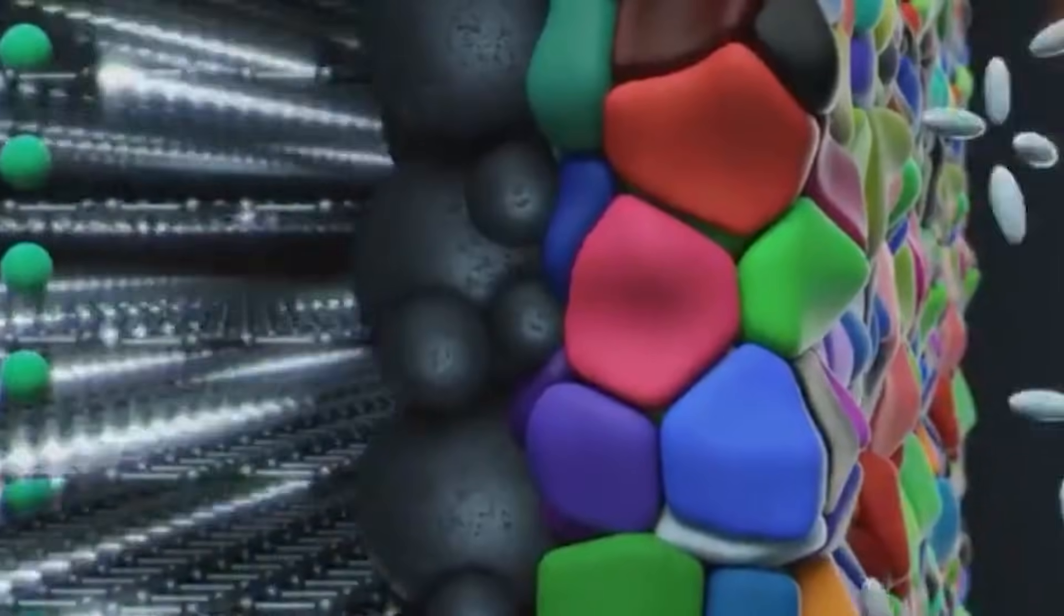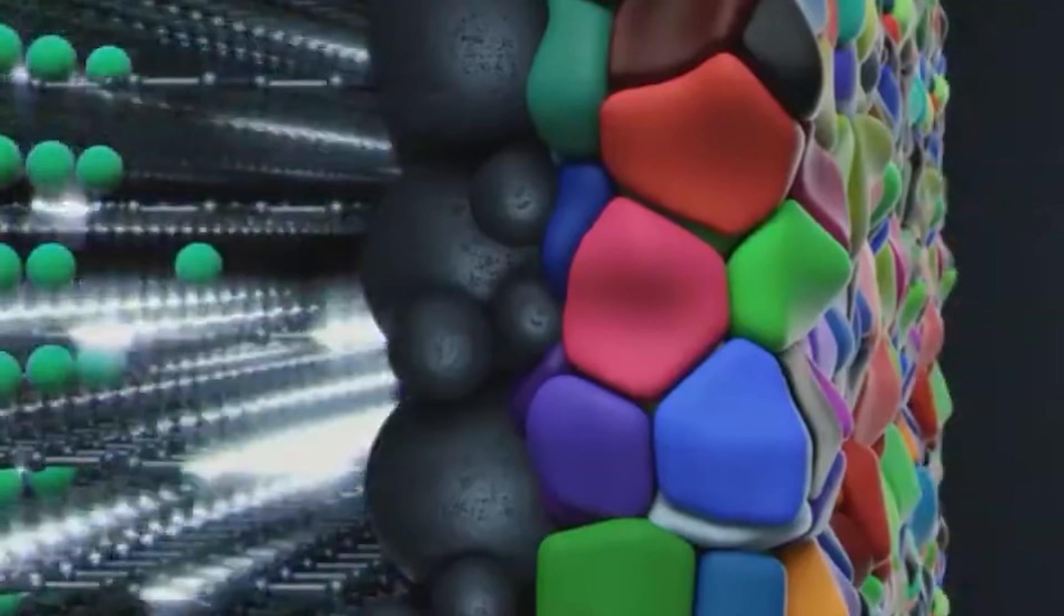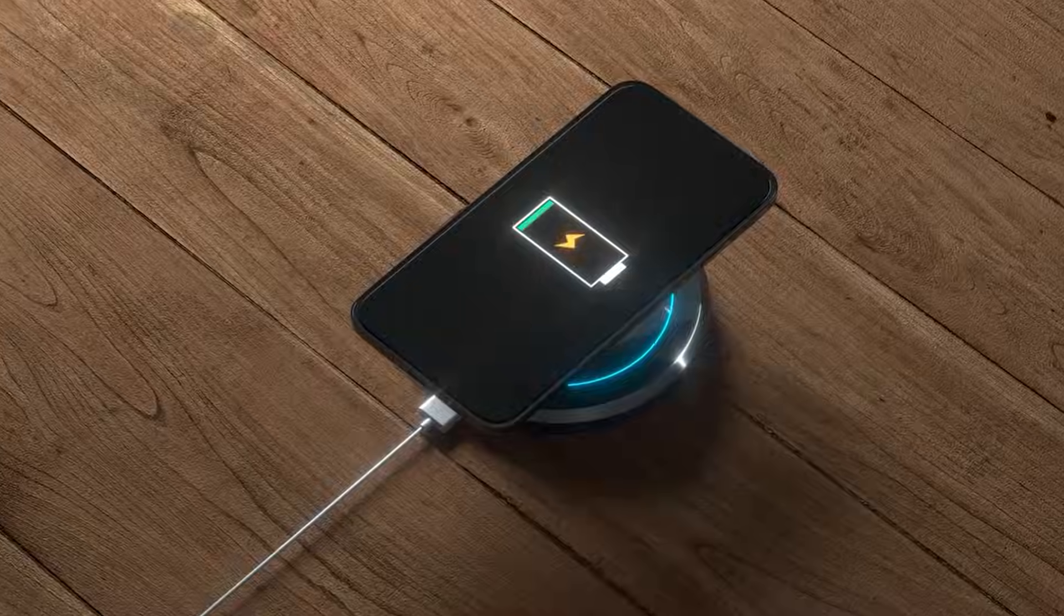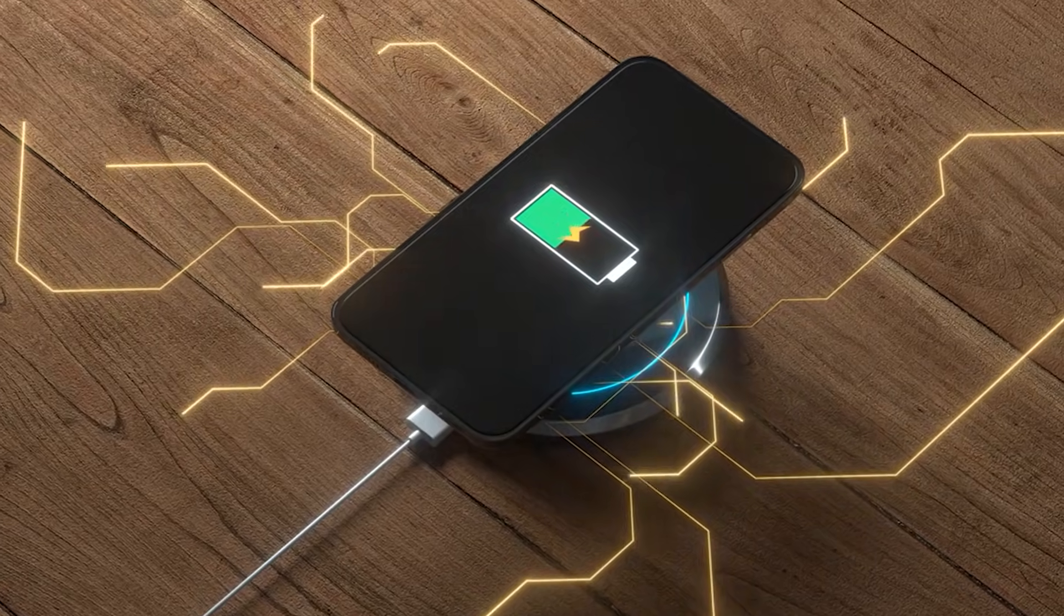At the same time, lithium ions leave the cathode, cross the electrolyte and separator, and end up stored in the anode. During discharge, the process reverses. Electrons run through your device, and lithium ions drift back through the electrolyte.